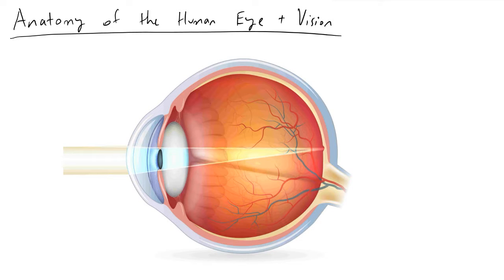In this video I will be discussing the anatomy of the human eye and vision. I will discuss the path that a photon will take as it enters your eye and is transduced by a rod or cone on your retina in order to make a signal that can be interpreted by your brain and will allow you to process an image.